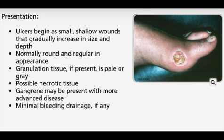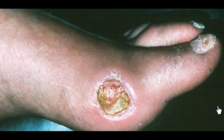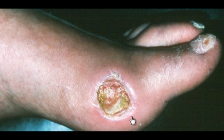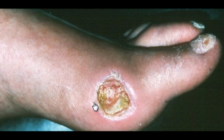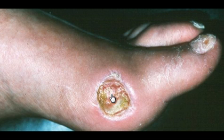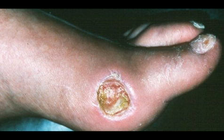Arterial ulcers generally begin as small, shallow wounds that gradually increase in size and depth. Ulcers are normally round and regular in appearance, or conform to precipitating trauma. Granulation tissue, if present, is pale or gray because of decreased oxygen supply. Necrotic tissue is generally desiccated black eschar, but may be yellow if the wound is bandaged in a way that maintains tissue hydration.